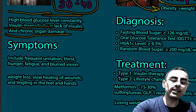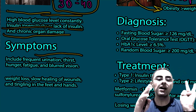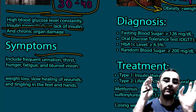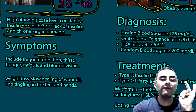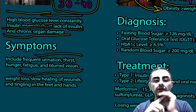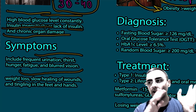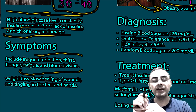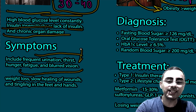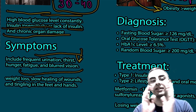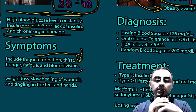The classical symptoms of diabetes are frequent urination, thirst, and hunger — these three are dominant. Fatigue and blurred vision also occur. In Type 1 diabetes, these symptoms occur abruptly and develop fast, whereas in Type 2 diabetes the symptoms develop slowly and progressively.